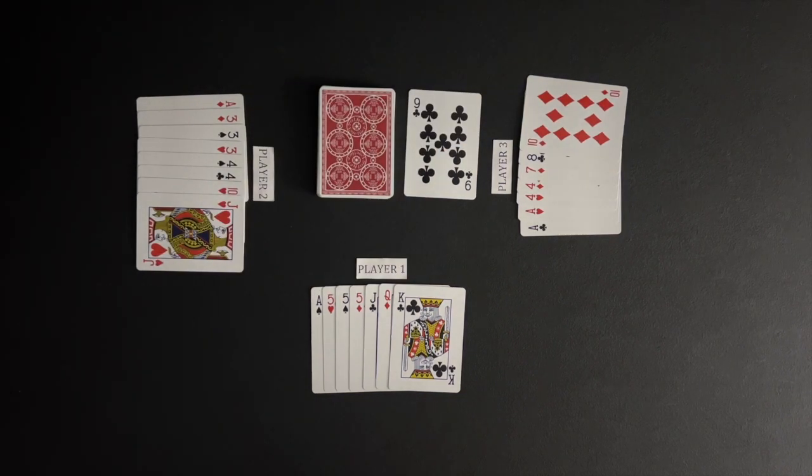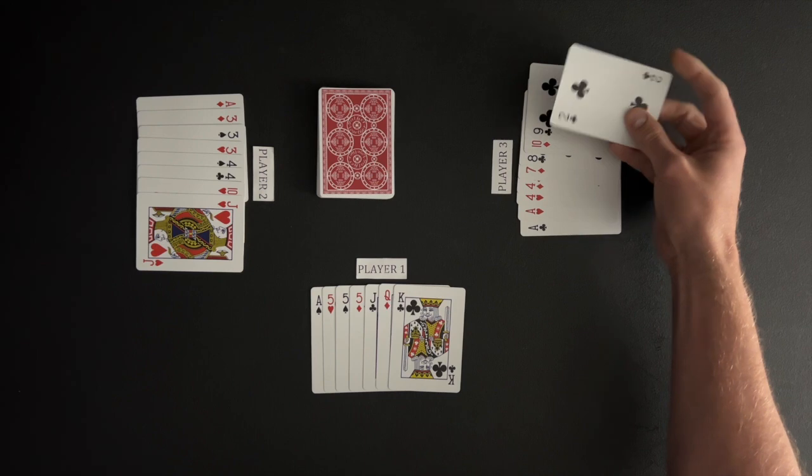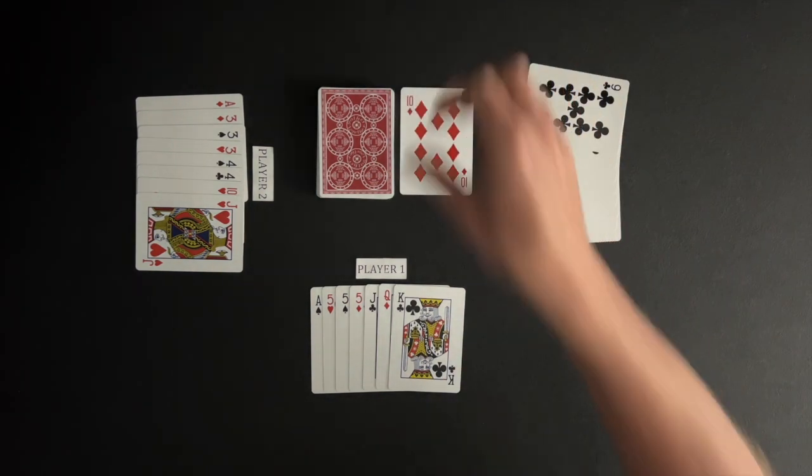Play moves to player 3. Player 3 will draw the top discard, and has to draw the top card of the middle deck for their second card. Player 3 will discard a card, and play moves to player 1.